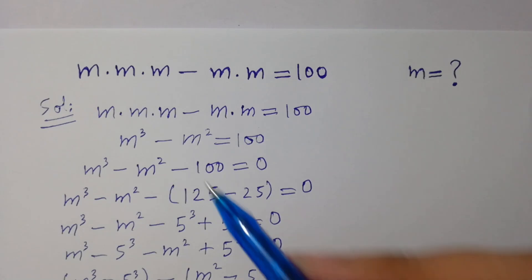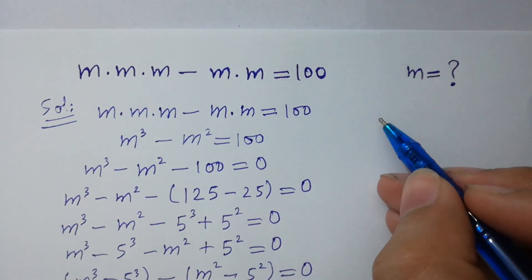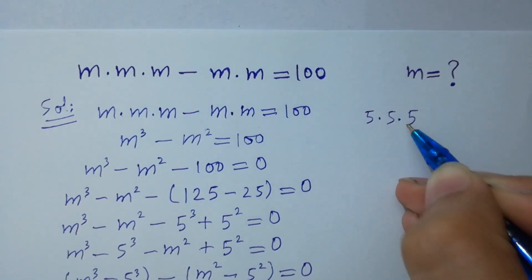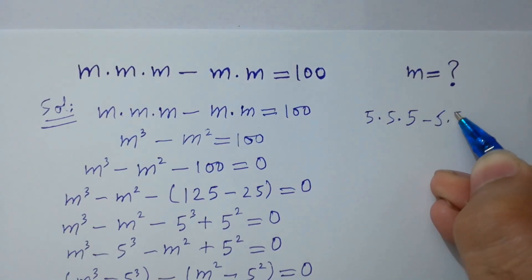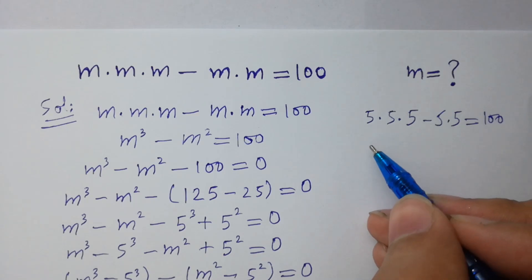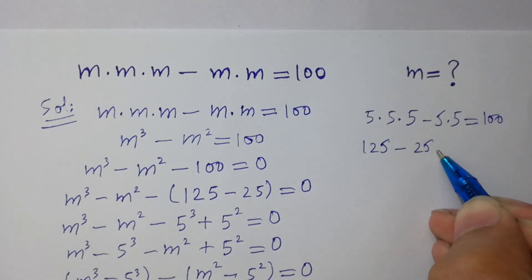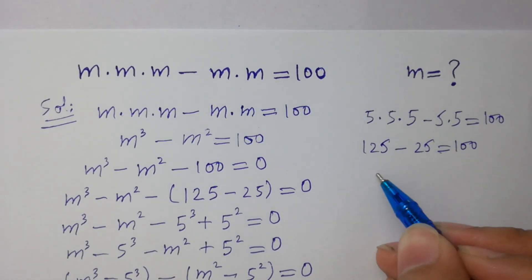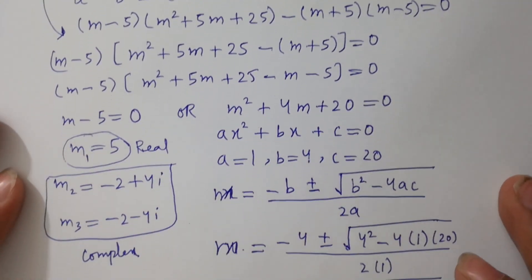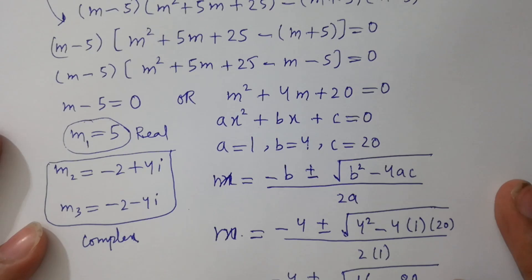Let's check: M times M times M minus M times M equals 100. Put M equals 5: 5 times 5 times 5 minus 5 times 5 equals 125 minus 25 equals 100. This confirms that M1 equals 5, M2 equals minus 2 plus 4i, and M3 equals minus 2 minus 4i are the correct solutions.